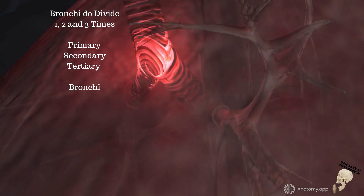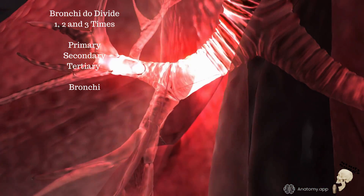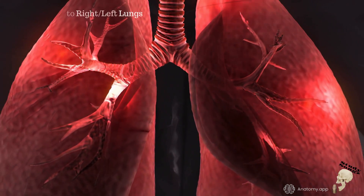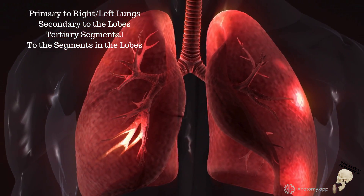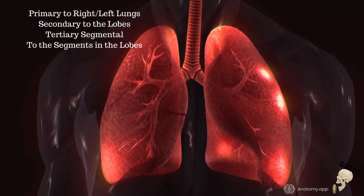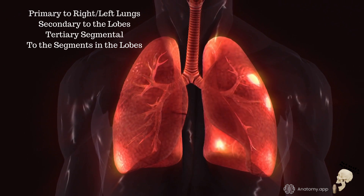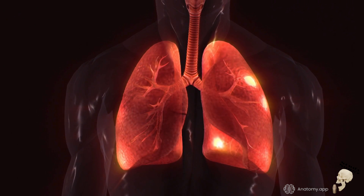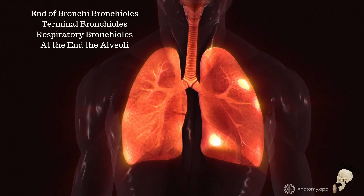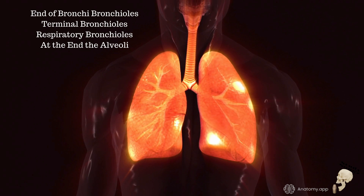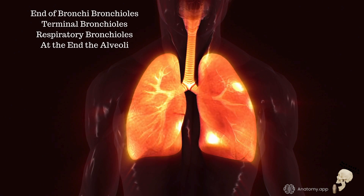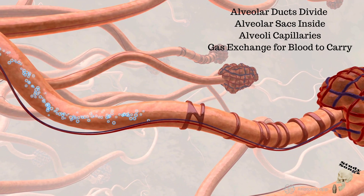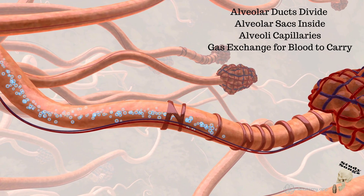Bronchi divide one, two, and three times — primary, secondary, tertiary. Primary bronchi go to the right and left lungs; secondary to the lobes; tertiary go to the segments in the lobes. End of bronchi: bronchioles, terminal bronchioles, respiratory bronchioles. At the end: alveoli, alveolar ducts divide, alveolar sacs.